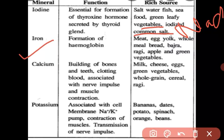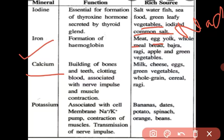Iron is a very important mineral because it is needed for forming hemoglobin. If our body is not getting iron properly, we develop anemia. The rich sources of iron include meat, eggs, whole meal bread, bajra, ragi, apple, and green vegetables.